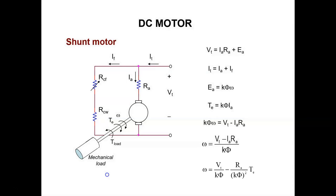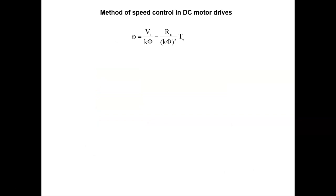We have completed examples 4.6 and 4.7. Today we are going to look more closely at the steady state speed equation of a DC motor. From this equation we can see that the steady state speed can be controlled by three methods: voltage control through VT, armature resistance control through RA, and flux per pole control phi, which is achieved by controlling the field current IF. For armature resistance control, we need to add an external resistor to the armature circuit.